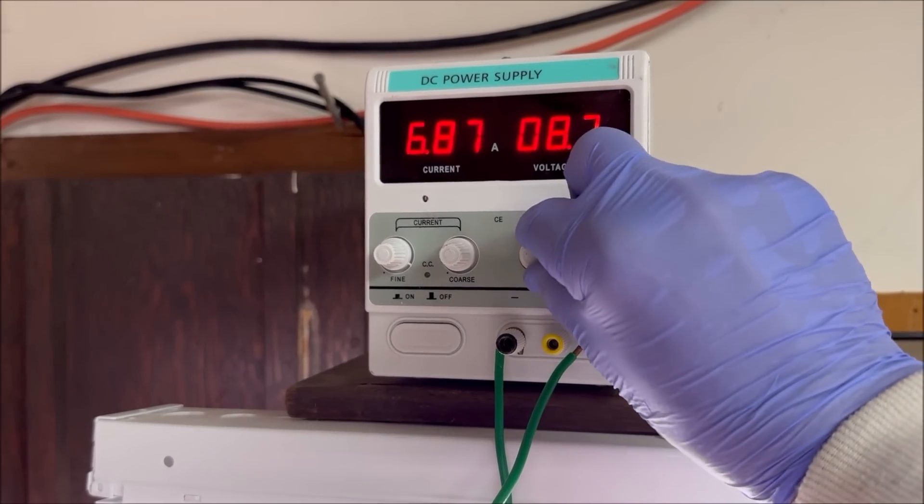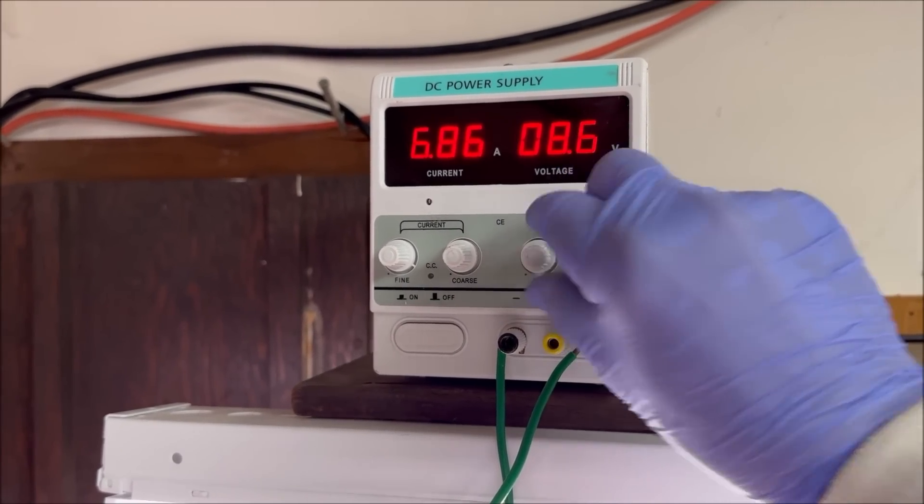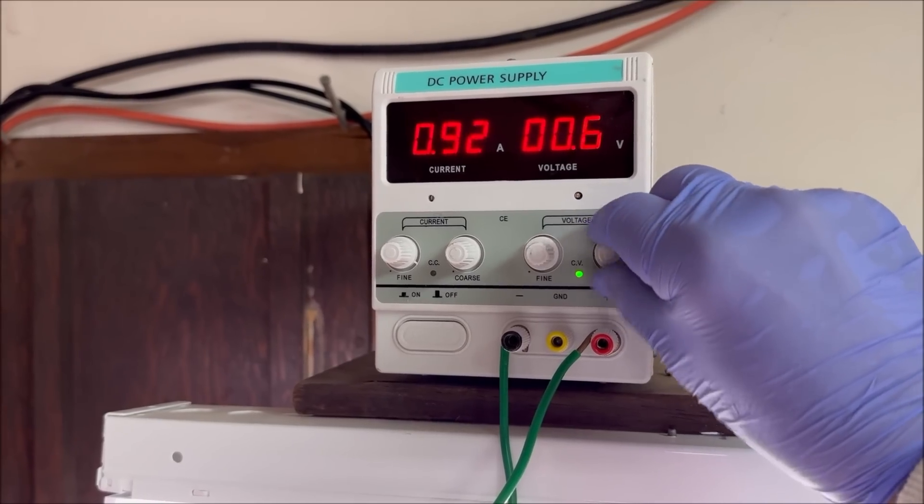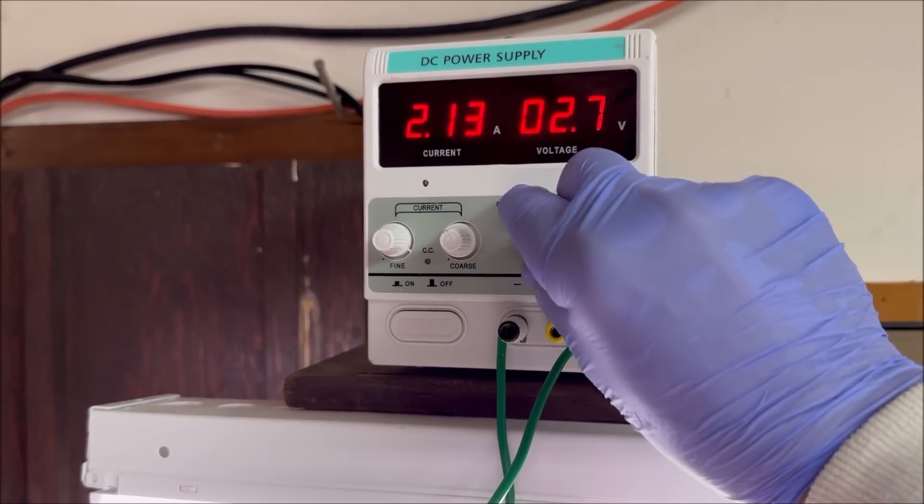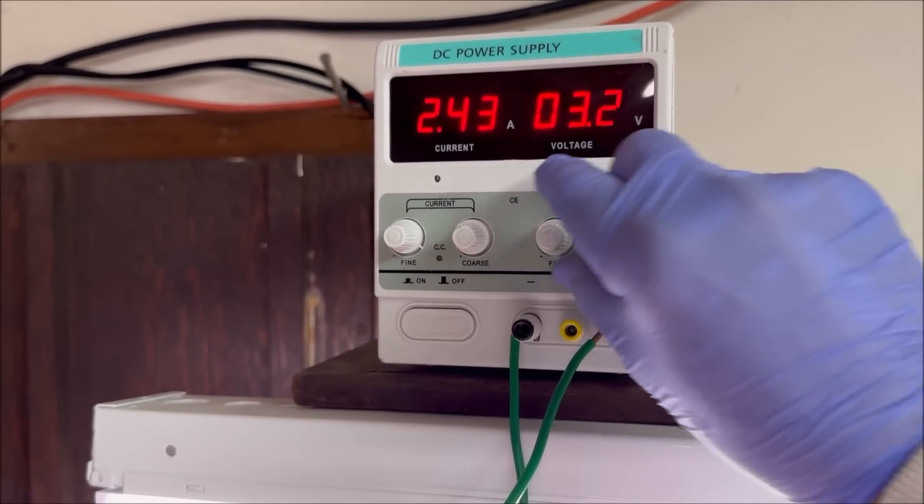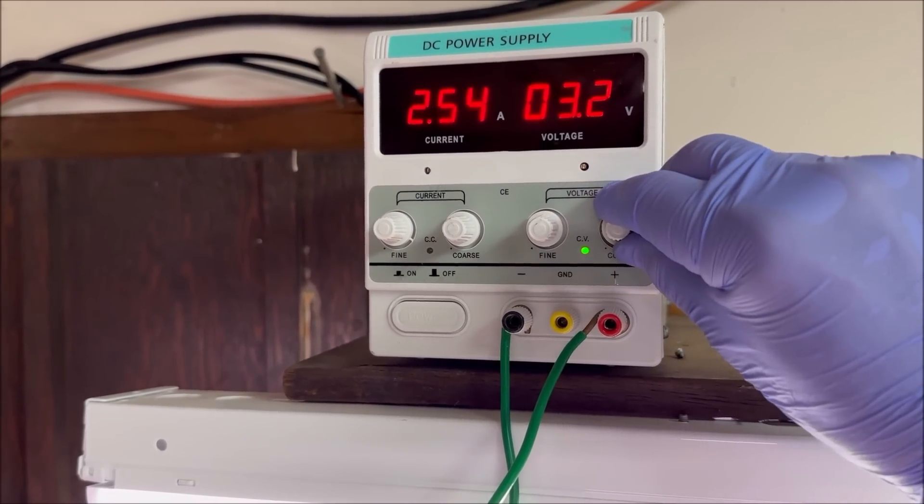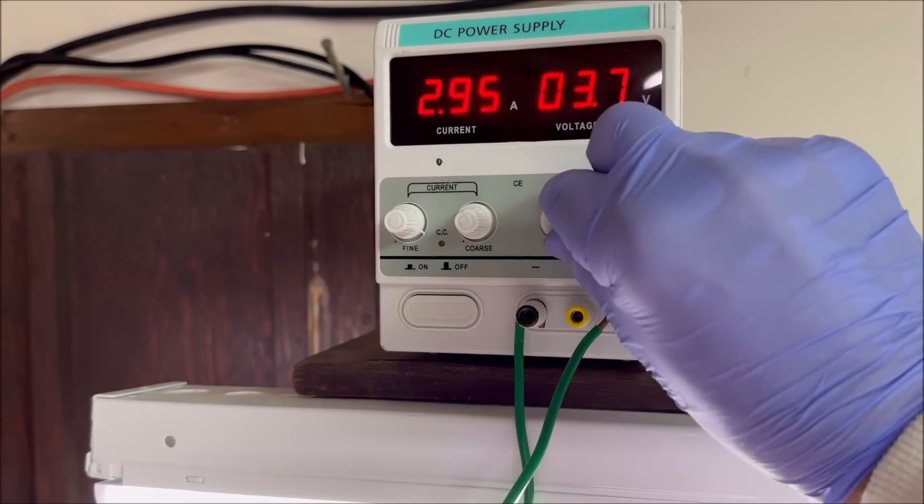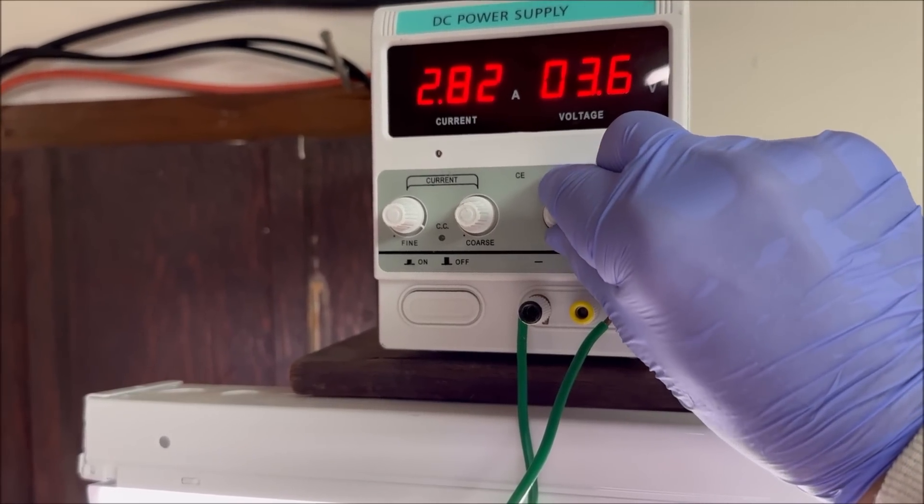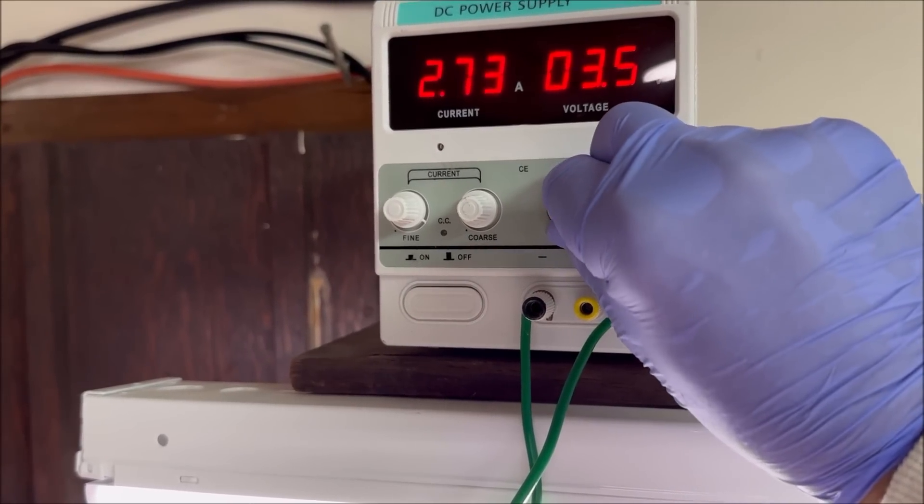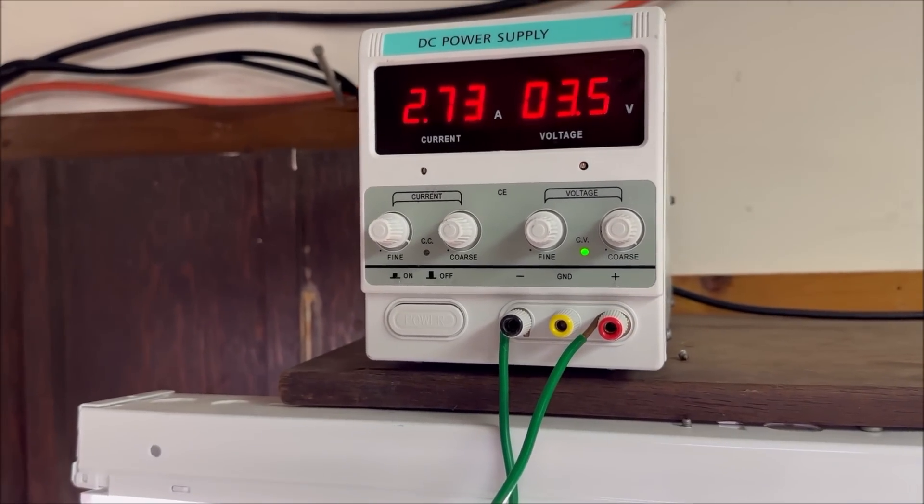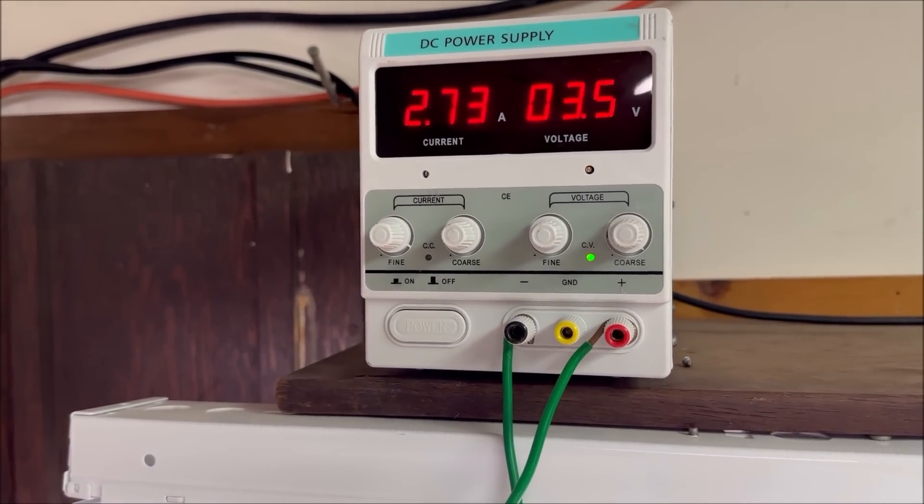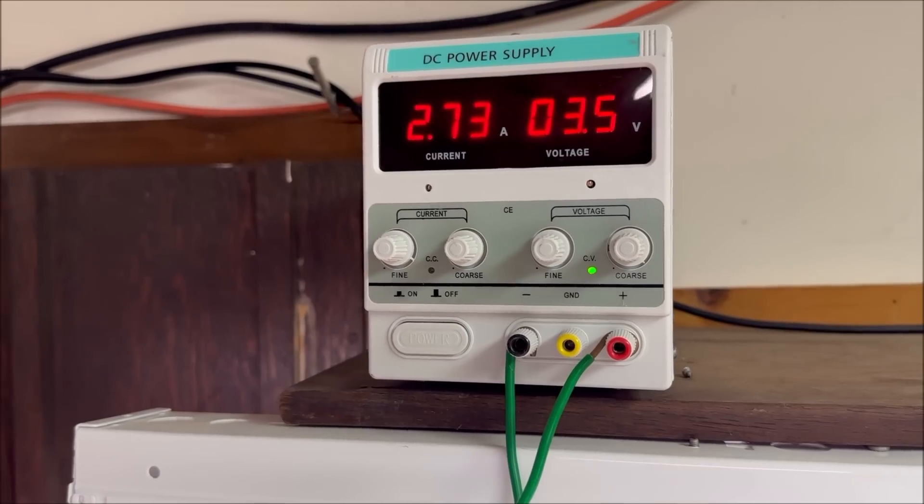8.7, how'd I get that? I must have bumped the knob there. And we're on 3.5 volts. There we go, 3.5 volts, we're pulling 2.7 amps through the cell.